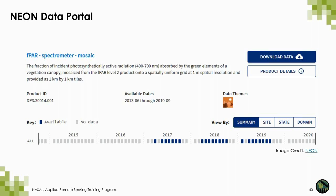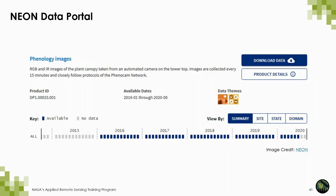These are the data collected on board the airborne observation platform, which I mentioned previously. You could use these data and compare them to the NASA products we talked about last week. You can also download data from the PhenoCam network, such as data products that include red, green, blue, and near-infrared images of the plant canopy taken from an automated camera on the tower top. The images are collected every 15 minutes and closely follow protocol for the PhenoCam network, and the data are available continuously from 2016 to present.